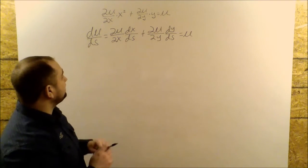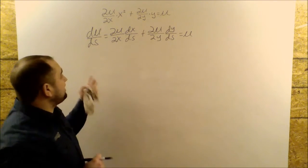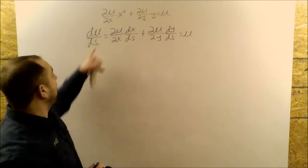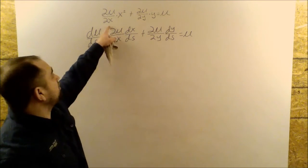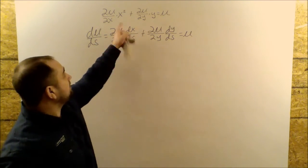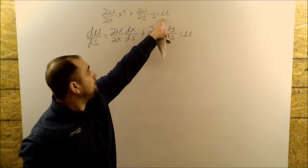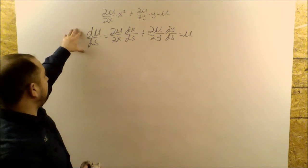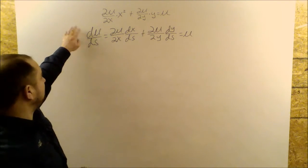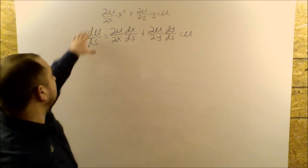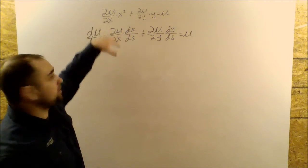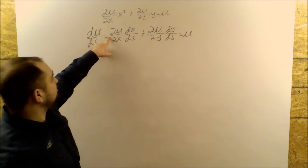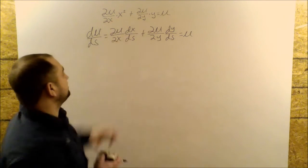We're going to use the same method that we used in the previous two examples to solve this first order linear non-homogeneous PDE. The method we're using is the change of variables. I've written out the two equations that we want to compare — a direct comparison. So we have ∂u/∂x and ∂u/∂x, so these coefficients have to be equal.